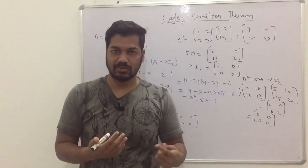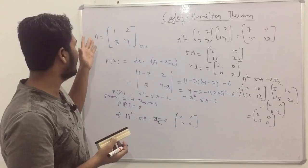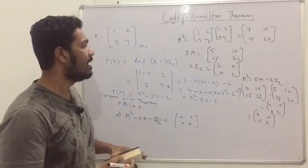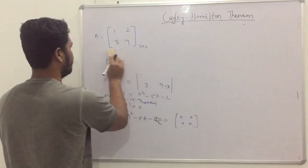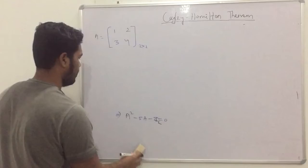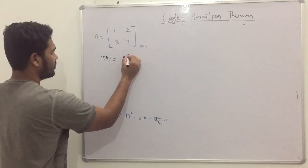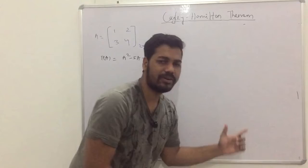Now let's see its application. This theorem is useful for finding any power of a matrix — A², A³, A⁴, up to Aⁿ — using the characteristic equation. The characteristic equation for our matrix is P(A) = A² − 5A − 2I₂ = 0.